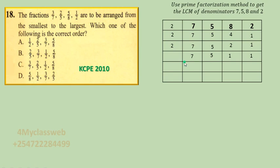Since 5 and 7 are prime numbers, we divide by 7 next: 7 divided by 7 gives 1, but 5 cannot be divided by 7 so it is dropped. Then we divide by 5: 5 divided by 5 gives 1. All numbers have now reached 1. So our prime factors that can divide these denominators are 2, 2, 2, 7, and 5.